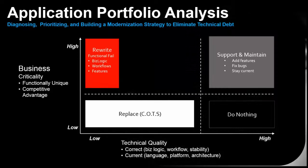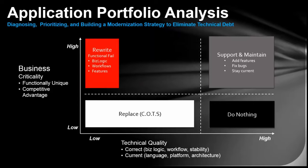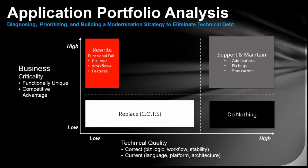Now we come to the most interesting quadrant: very important to the business but low technical quality. Let's break that into three sub-categories. First, applications that are important to the business but functionally no longer useful — the algorithms don't match current business needs, the workflows don't match current processes, they lack desired features, and technical quality is low. These are good candidates for a greenfield rewrite, where you can marshal your team, bring users on board, really design what you actually need, and start delivering functionality that works for people.